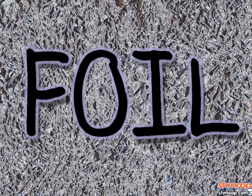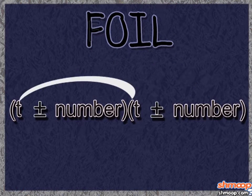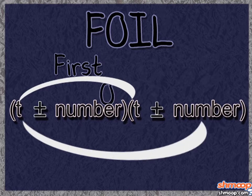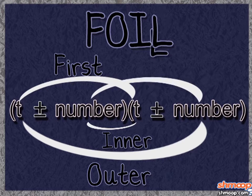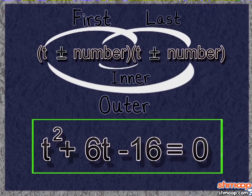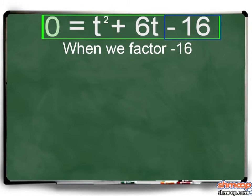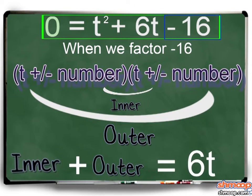Remember FOIL. When we take an equation that looks like this and multiply the first, outer, inner, and last terms, it means that when we factor negative 16, the sum of the outer and inner products must equal that pesky middle term, 6t.